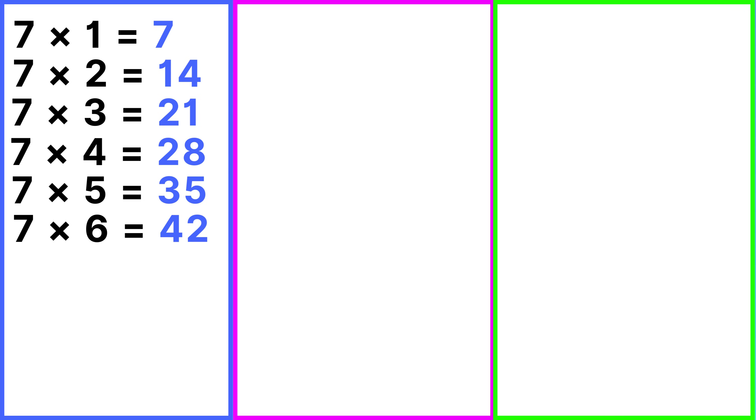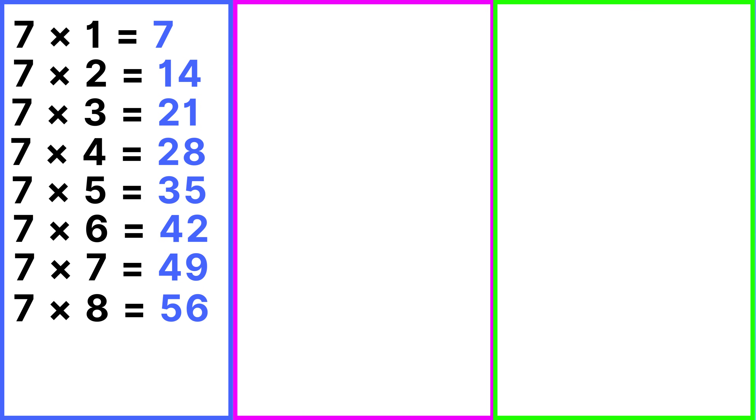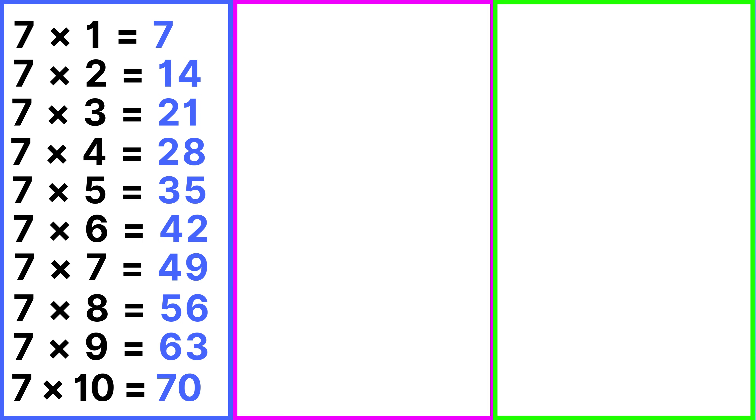Table of 7: 7 ones are 7, 7 twos are 14, 7 threes are 21, 7 fours are 28, 7 fives are 35, 7 sixes are 42, 7 sevens are 49, 7 eights are 56, 7 nines are 63, 7 tens are 70.